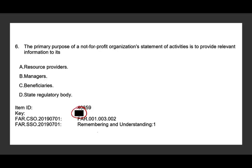The first thing I'm going to tell you: this question is remembering and understanding. Once you see it's remembering and understanding, it means it should be fairly easy — you either memorize the concept or, if you understand the concept, you should be able to answer the question in a moment. The first question reads: the primary purpose of a not-for-profit organization's statement of activities is to provide relevant information to its what.